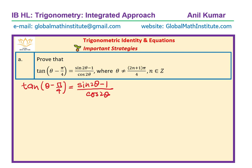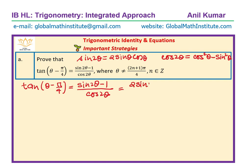It's better to start with the right-hand side, which has double angles in it. Sin 2θ is 2 sin θ cos θ. For cos 2θ, we use cos²θ - sin²θ because that can be factored. So we rewrite the right-hand side as (2 sin θ cos θ - 1) over (cos²θ - sin²θ).